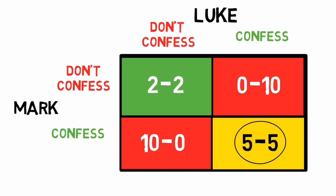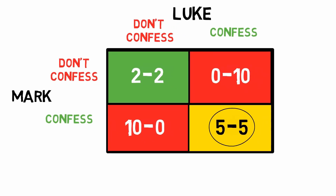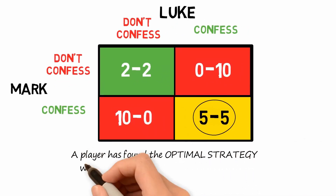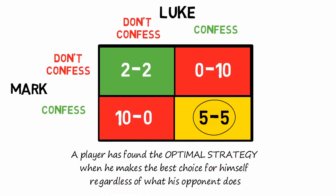But why? According to what is known as the Nash equilibrium, both players in this situation will end up making the best move for them individually, but the worst move for them collectively. A player has found the optimal strategy — the dominant strategy — when he makes the best choice for himself regardless of what his opponent does. Remember, here we're always talking about opponents acting rationally. If Mark confesses, he is released immediately or, at worst, receives a five-year sentence. If he chooses not to confess, in the best case he gets two years, but in the worst case ten years — which is much worse. The best choice is always to confess.